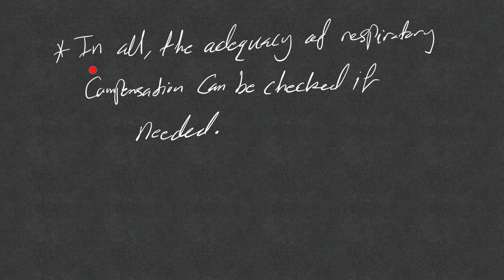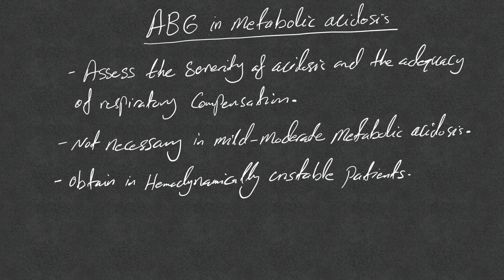In all cases of metabolic acidosis — whether high or normal anion gap — we can check the adequacy of respiratory compensation if needed. I don't check it for everyone. I obtain an ABG mainly for severe acidosis or when I want to determine if the primary disorder is respiratory. ABG in metabolic acidosis helps assess severity and adequacy of respiratory compensation; it's not necessary in mild to moderate cases.